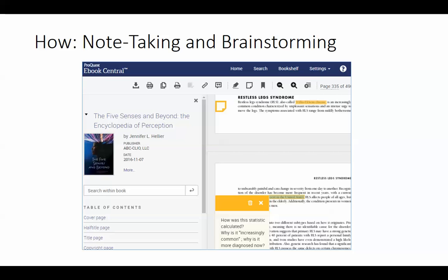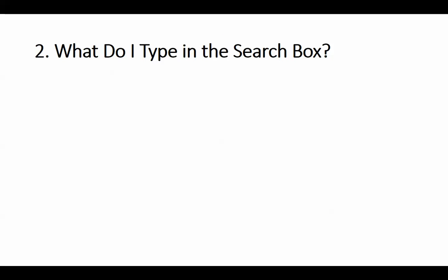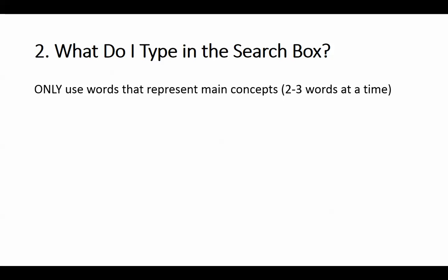Let's move on to search technique number two: what actual words do you put in the search box? You only use words that concisely represent your main concepts. In general, this is going to be the nouns from your list — names of people, places, and things. Leave out adjectives, adverbs, prepositions, and generic words like 'effect' or 'impact.' Remove punctuation such as commas. For example, if researching police tactics in controlling riots, you might simply type: police tactics riots.